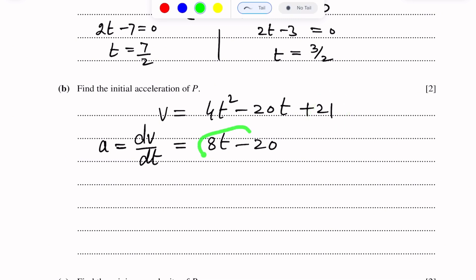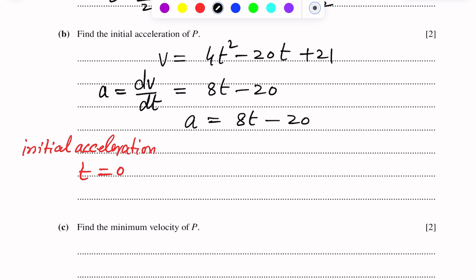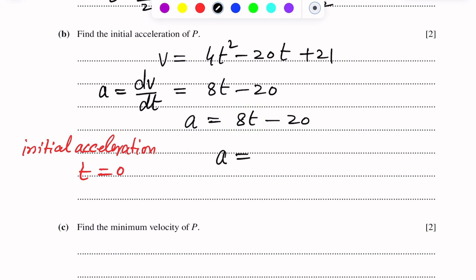So the acceleration-time relation is a = 8t − 20. For the initial acceleration, we put t = 0. This term becomes 0, so we get a = −20 m/s². The negative sign shows that the acceleration is directed opposite to the positive direction at t = 0.